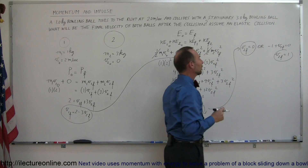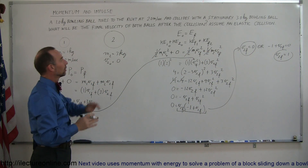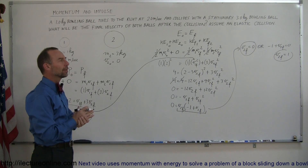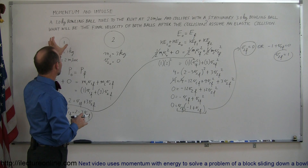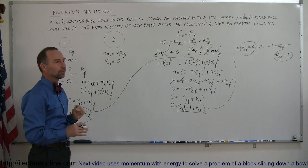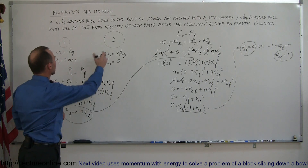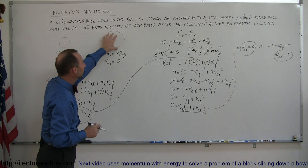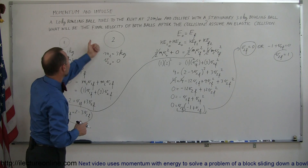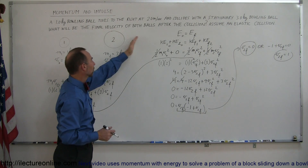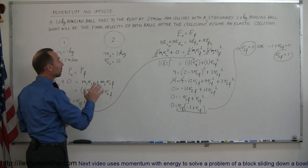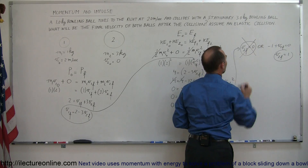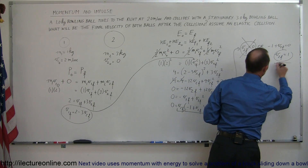One of these two solutions must be the correct one. V2 final = 0 would mean the big ball doesn't move at all after being hit — that's not physically possible, because if momentum before the collision is to the right and this ball doesn't move, there's no way the first ball can be pushed back to the left. Logic dictates that v2 final = 0 is not physically possible, so v2 final = 1 meter per second.